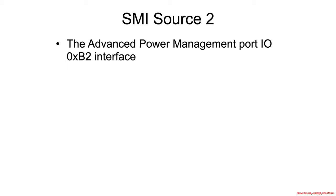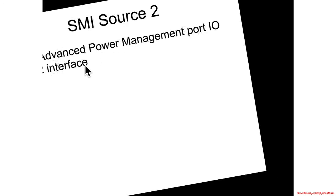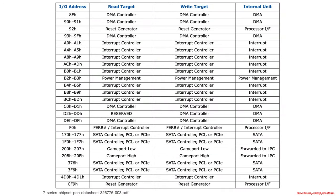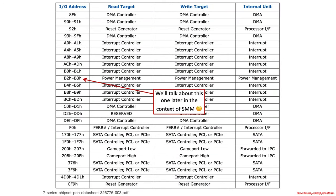Now let's talk about the second SMI source that we're going to highlight, and this is a big one: the Advanced Power Management Port I/O Port B2 interface. This is a big one because it's going to be used basically as an interface to SMM as a sort of syscall-ish type thing.